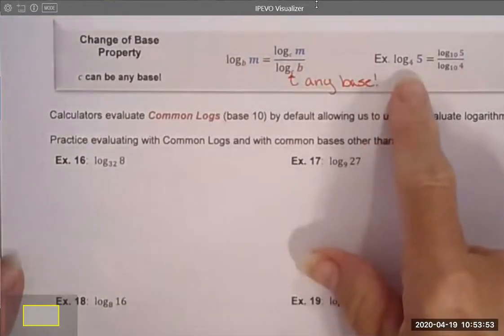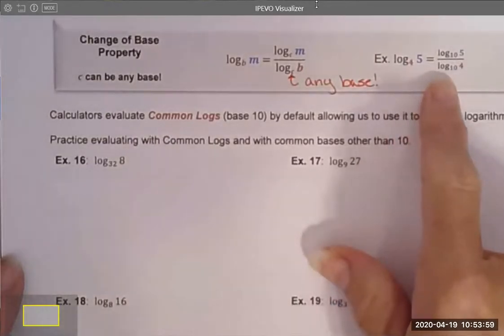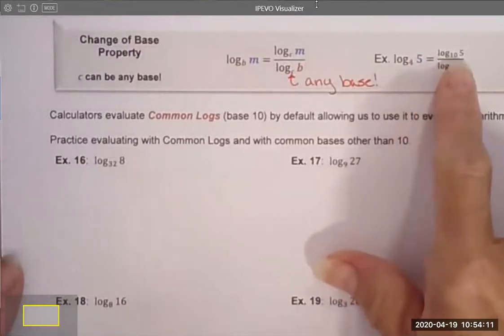Here's an example where I take log base 4 of 5 and that is equal to, in this case, I chose base 10. Base 10 is our common base. And a lot of times you'll see this written without the 10 here. But for formality purposes, I put it here. I rewrote this as log base 10 of 5 divided by log base 10 of 4.